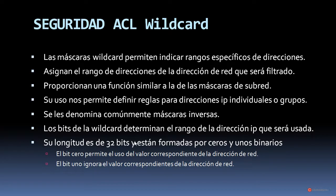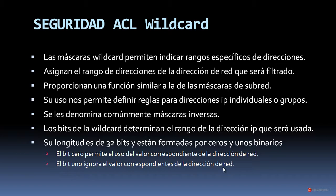Los bits de Wildcard determinan el rango de la dirección IP que será utilizada. Su longitud es de 32 bits y están formadas por ceros y unos binarios, al contrario de la máscara de subred. El bit 0 permite el uso del valor correspondiente de la dirección de red, y el bit 1 ignora el valor correspondiente de la dirección de red.